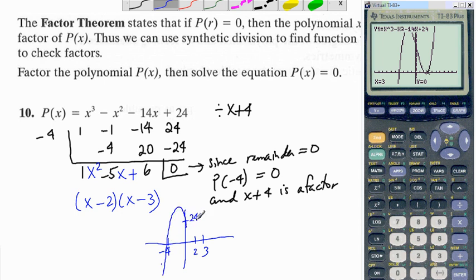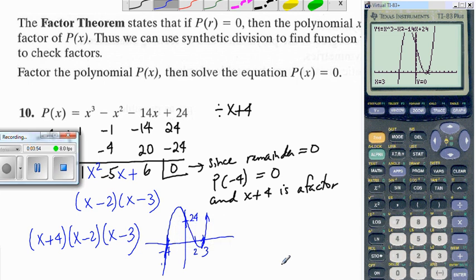So the graph looks like this. And the factors are x plus 4 times x minus 2 times x minus 3.